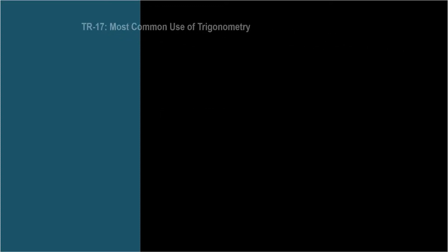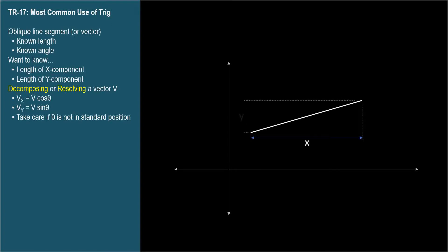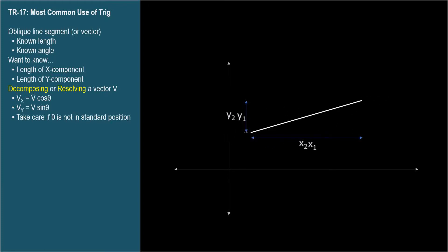An oblique line segment on a coordinate plane has an x component, denoted by this distance, and a y component, this distance. We often want to know what these distances are. This would be simple if we knew the coordinates of the endpoints — we did this in TR-11.